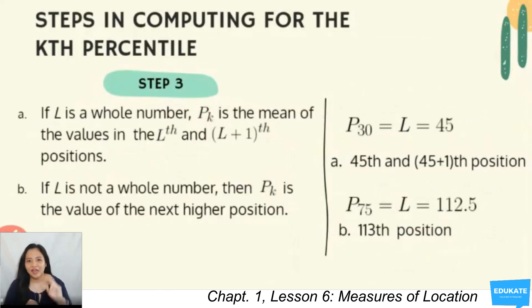For step 3, we have your two cases: if L is a whole number and if L is not a whole number. If L is a whole number, PK is the mean or the average of the values in the L and L plus 1 position. If it's not a whole number, PK is the value of the next higher position or the next high number.